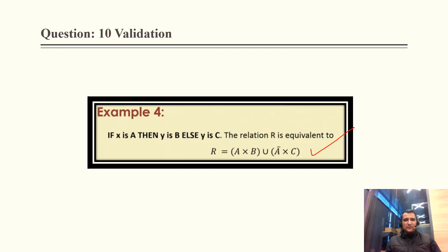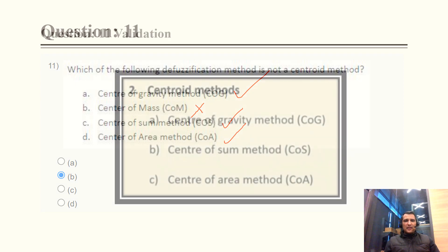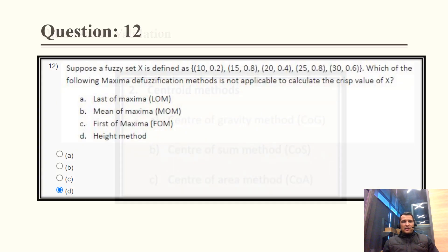Question 11: Which of the following defuzzification methods is NOT a centroid method? Center of gravity, center of sum, and center of area are all centroid methods used in defuzzification. However, center of mass is NOT a defuzzification centroid method. The correct answer is option B.